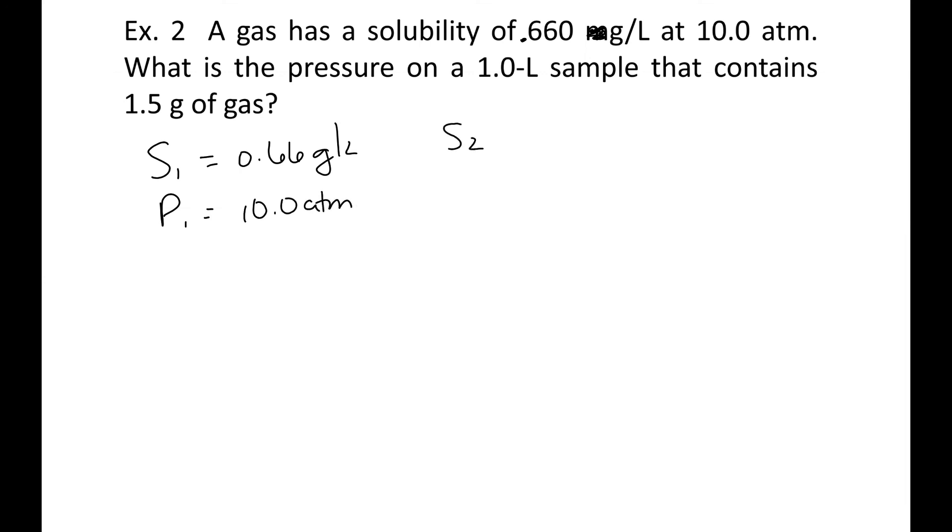Now, the problem doesn't outright come out and say the solubility is, but you have a mass and in a 1 liter sample. So this is going to be 1.5 grams for every 1 liter, or 1.5 grams per liter. And P2 is what you're going to look for now. So we're going to cross multiply, so we get 10 times 1.5 over 0.66. And we do the math on this one. We get 22.7 atmospheres, and that's our final pressure.